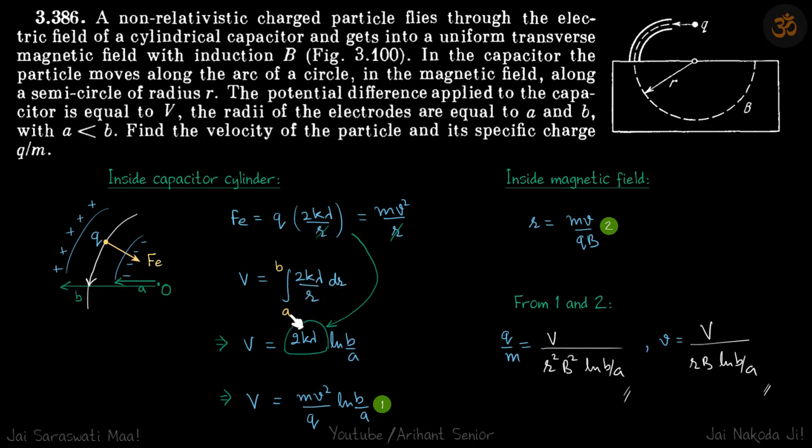E dot DR from A to B. E again is 2k lambda by R dot DR. This will simplify to 2k lambda ln B by A. Now you can replace 2k lambda from here to here.